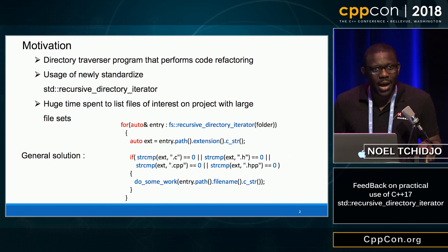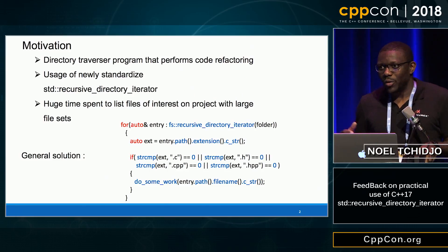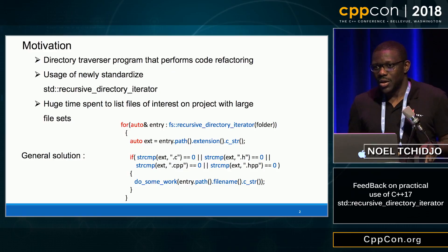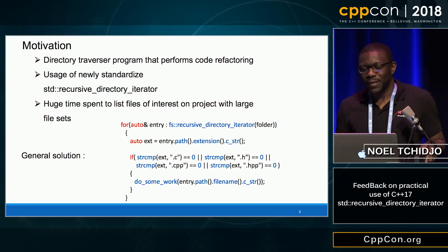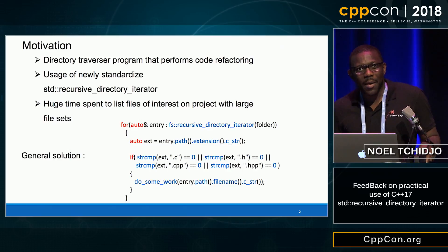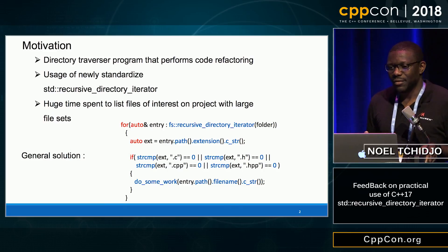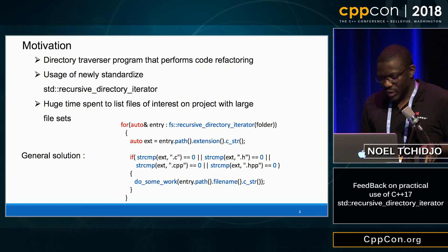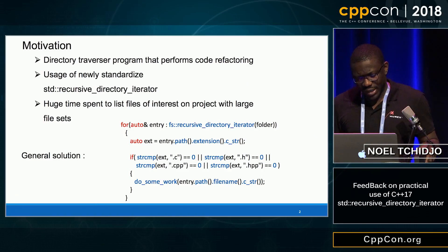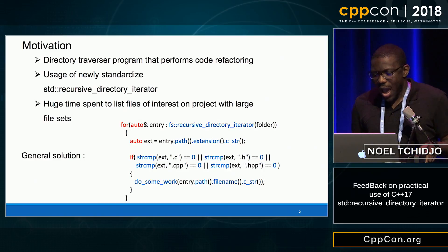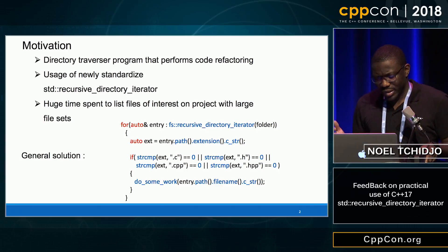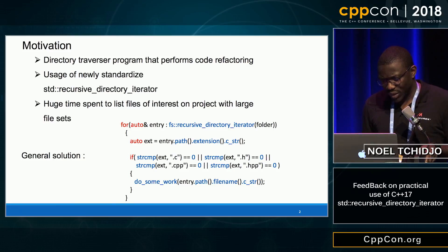From time to time, we develop tools to refactor code when we have specific complex refactoring to perform. Last time, we ended up thinking that it was taking too much time just to list the files we are interested in. Typical usage is in a for loop: you use a recursive_directory_iterator, and for each entry, you retrieve the extension, and check that the extension corresponds to what you are interested in.